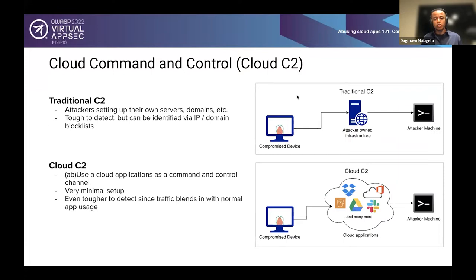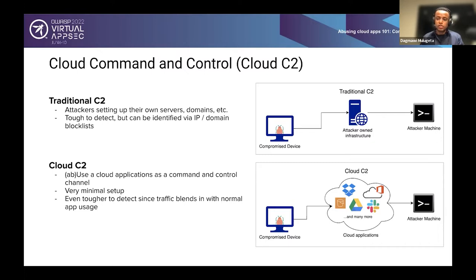So what do we mean when we say cloud command and control or cloud C2? Traditionally, attackers would set up their own infrastructure — their own servers, domains, and hosts — to tunnel traffic through. A compromised device reaches out to attacker-owned infrastructure, which then pulls commands from the attacker machine. The security community has done a pretty good job using threat intelligence feeds to identify this kind of infrastructure. Security personnel would identify a C2 server, take its IP address or hostname, and feed it to a threat intelligence feed for others to consume and defend against.